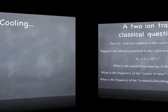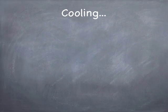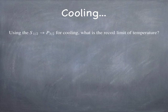So let's talk about cooling. Imagine that we're using the S1 half P3 halves transition for cooling. That's a dipole allowed transition. I'd like you to work out the recoil limit of the temperature. What is the lowest temperature you can reach using that transition? And that'll be enlightening, I think.